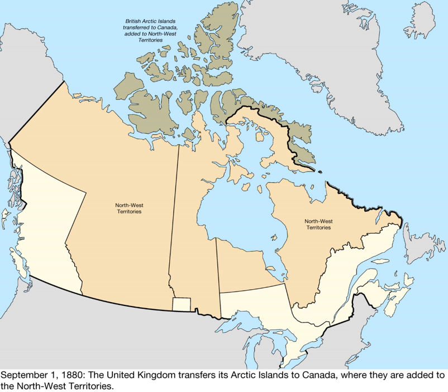After the 1880 transfer, Canada gradually incorporated the islands with Rupert's Land into the Northwest Territories. The transfer was necessary over the fear of American interest in the area as part of the Monroe Doctrine. On April 1, 1999, the territory of Nunavut was created from the eastern portion of the Northwest Territories. The majority of the islands became part of Nunavut.